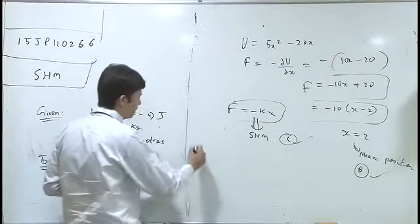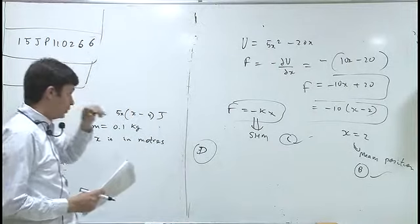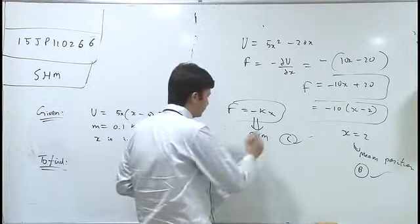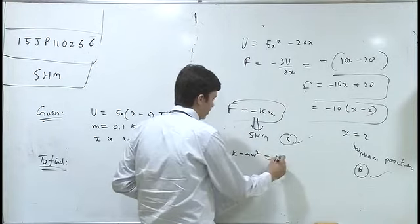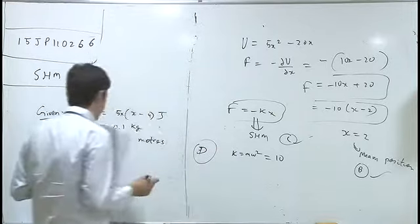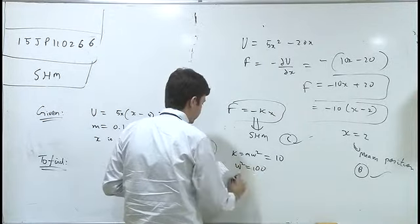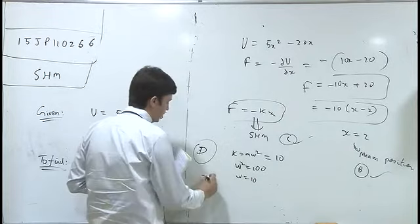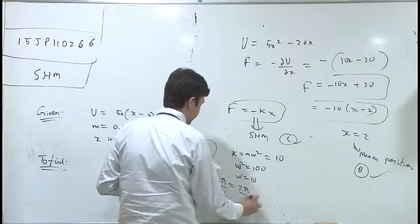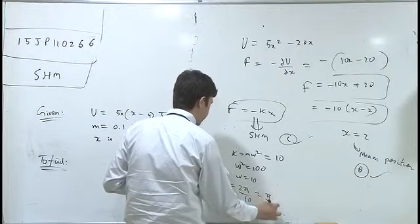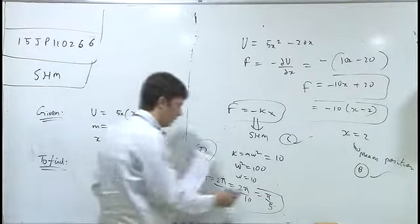Option D will be the time period. K value equals M omega squared equals 10. M equals 0.1, so omega squared equals 100, omega equals 10. Time period equals 2 pi by omega equals 2 pi by 10 equals pi by 5 seconds.